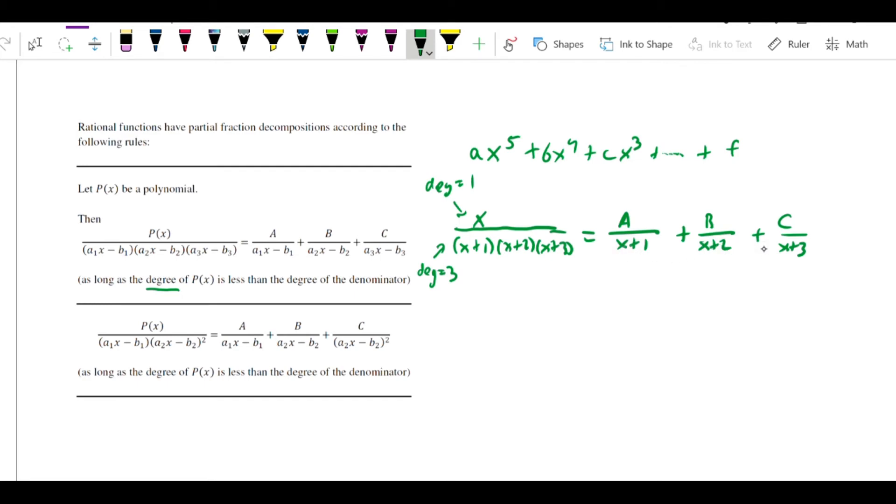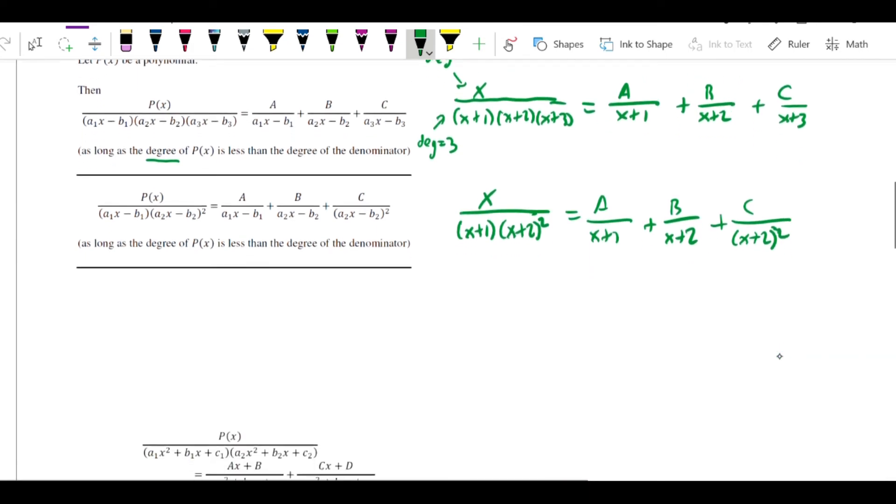In this case, where we have some other polynomial and we have a repeated linear factor, like for example, if this was x over x plus 1, x plus 2 squared, this would be treated this way. We'd say that's a over x plus 1, plus b over x plus 2, plus c over x plus 2 squared. So the rules about how you can decompose these are fairly straightforward, and you just have to learn them, and then I'll show you how to set them up and solve for the constants.